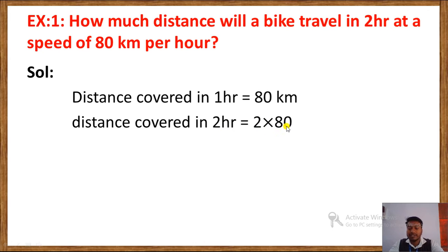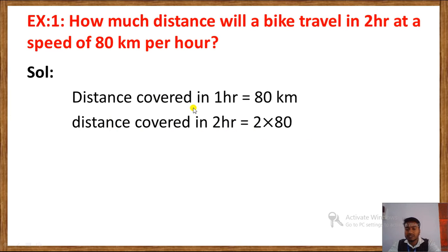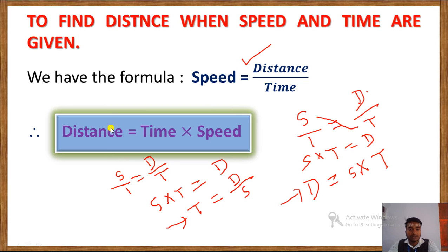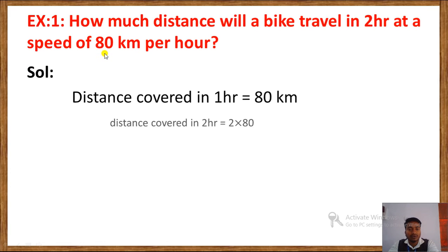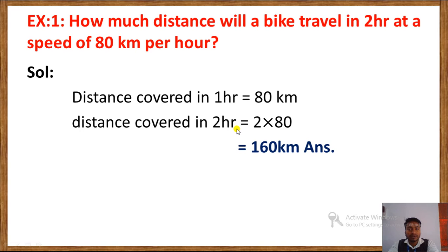2 into 80 equals 160 kilometres. The distance covered in 2 hours is 160 kilometres — that is the answer. Using the formula distance equals speed into time: speed is 80 km/h and time is 2 hours. Multiplying gives us 160 kilometres.